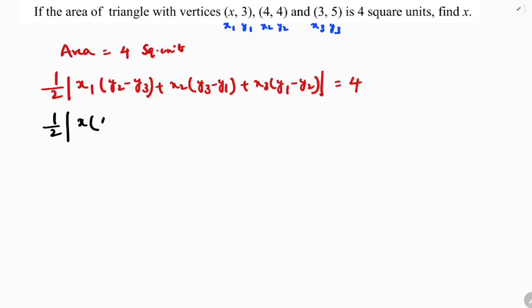Plus x2 is 4, so 4 times (5 - 3). Plus x3 is 3, so 3 times (3 - 4), equals 4.